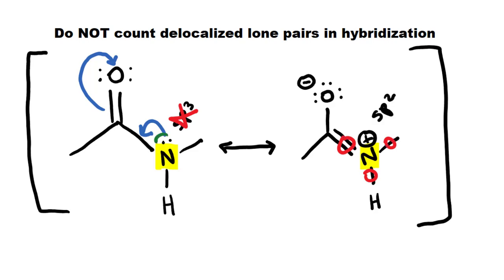Lone pairs that can move via resonance are said to be delocalized, and you do not count them when you're doing hybridization.